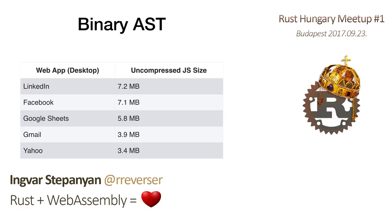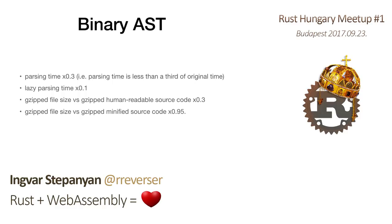It's not only slow to execute — you can optimize a lot of it — but it's also slow to even download or parse. Even before you start executing, you spend an enormous amount of time just initializing. Modern browser engines try to work around that by doing streaming parsing as content is downloaded, but it's very hard due to JavaScript semantics where a variable can be used before it's defined.